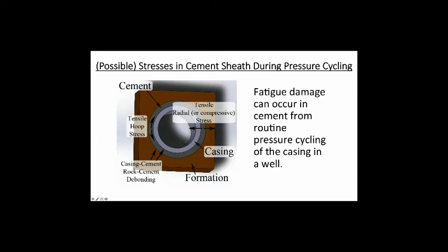Back to the pseudo well: when the inner casing is pressurized, it expands radially and can cause a compressive stress on the cement, and also a tensile hoop stress that can eventually lead to radial fractures. When pressure is released, the casing retracts, and if there's a good bond between cement and casing, it can pull on the cement causing a tensile radial stress. If the cement debonds from the casing, a micro annulus can form through which gas can flow. A micro annulus can occur at both the cement-casing and cement-rock boundaries.